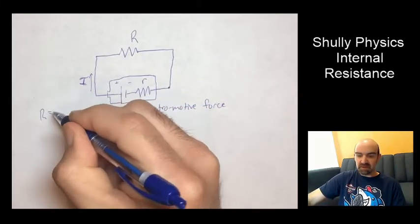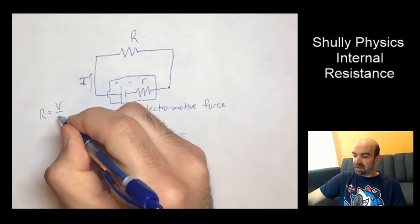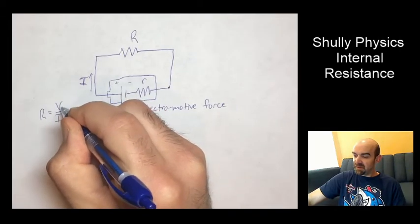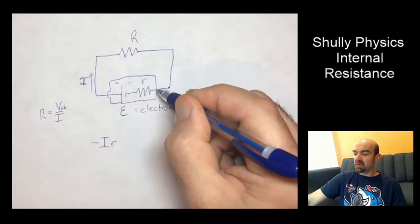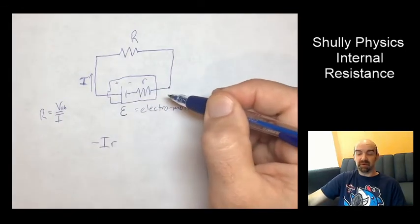You might recall that resistance is the ratio of V over I. So VAB would be, AB would be between A and B, between one point in the resistor and the other.